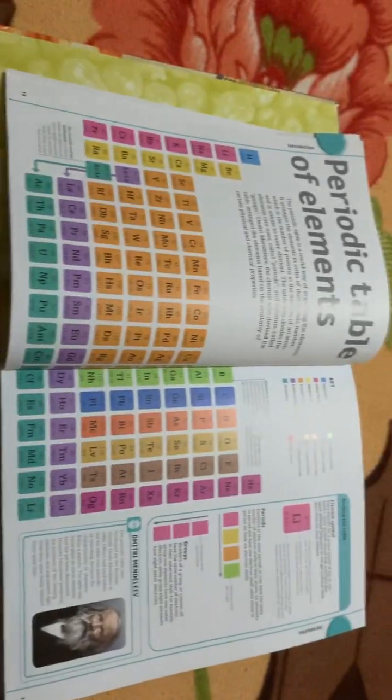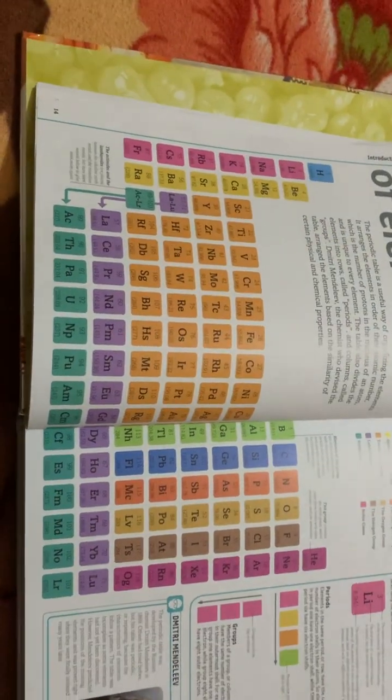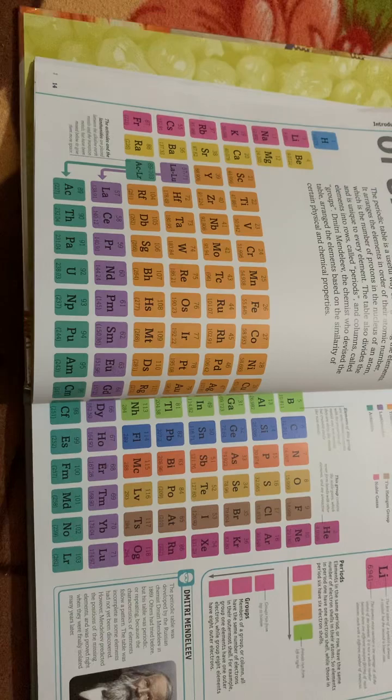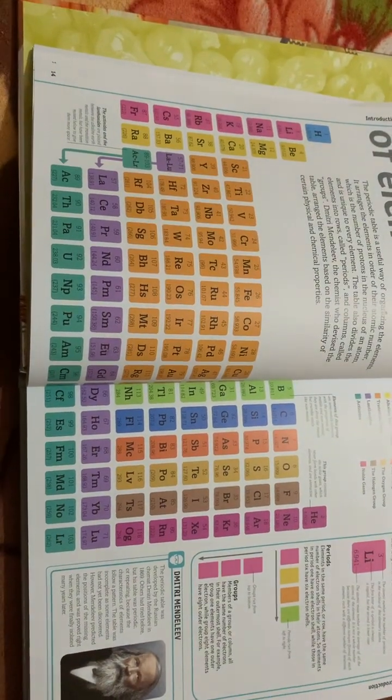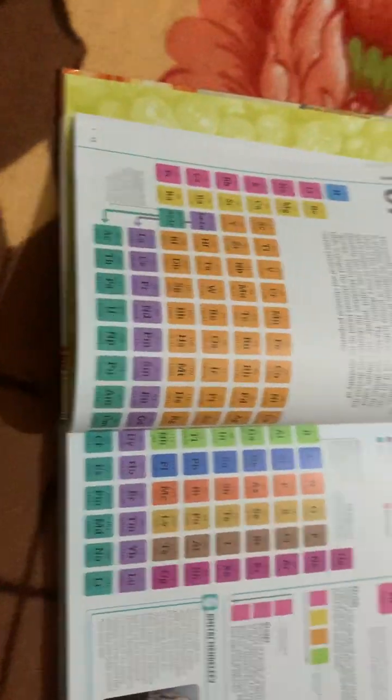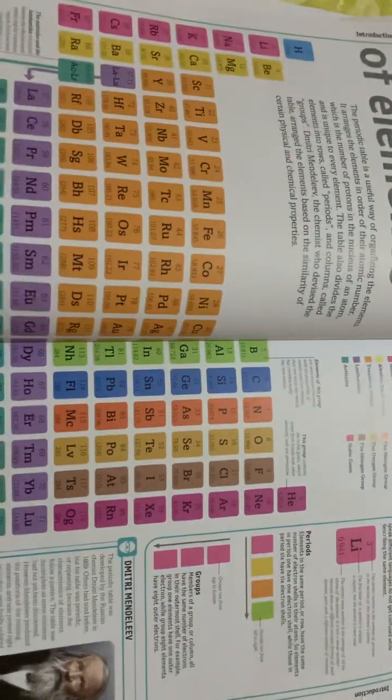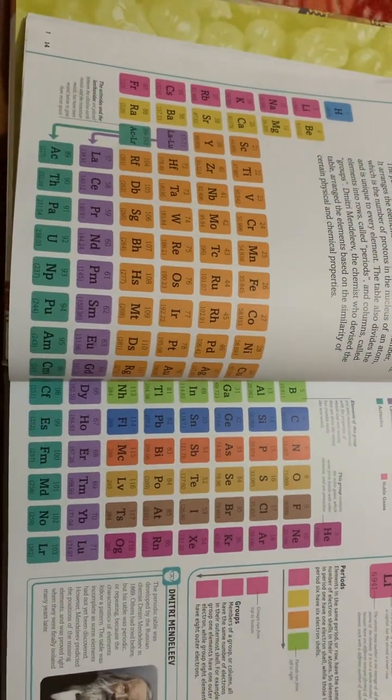Now let's get started. This table houses 118 elements, or should I say things. These elements can combine, like for example...